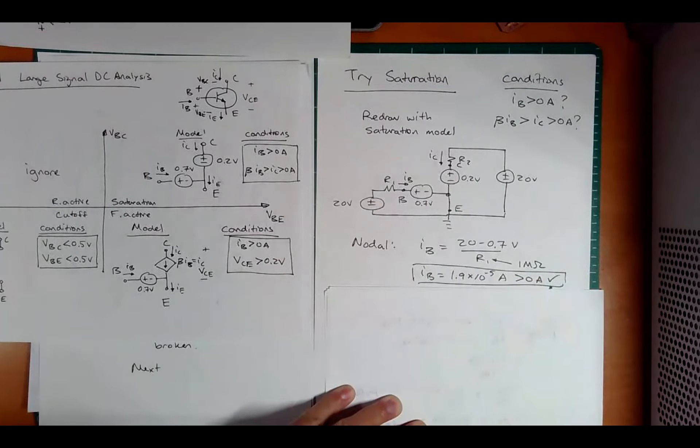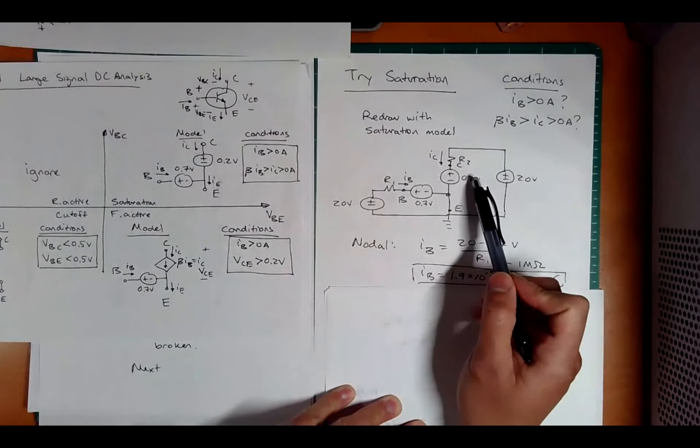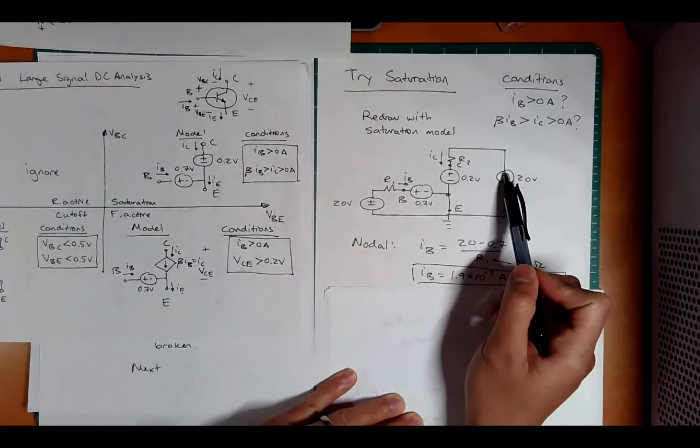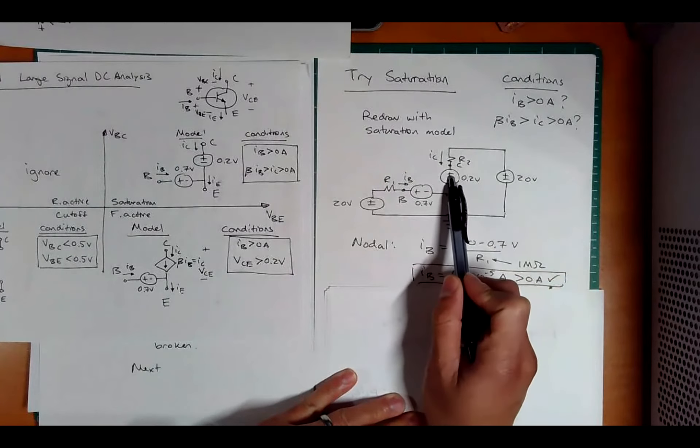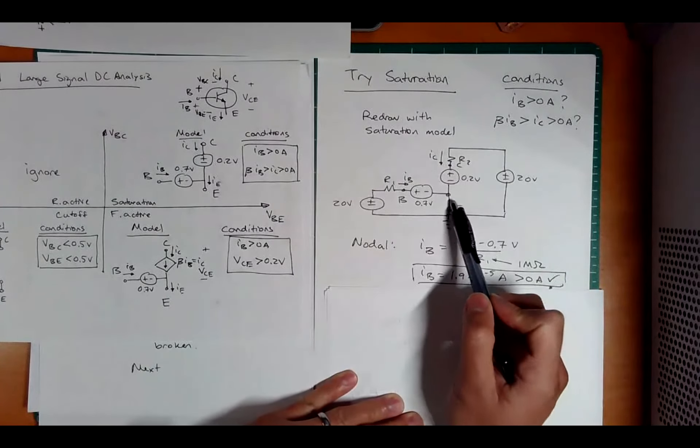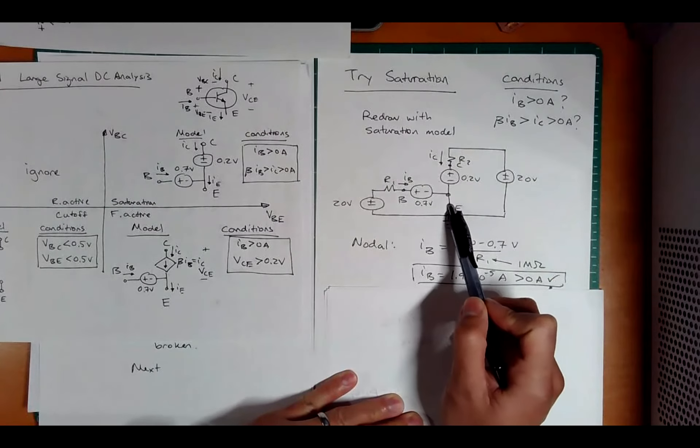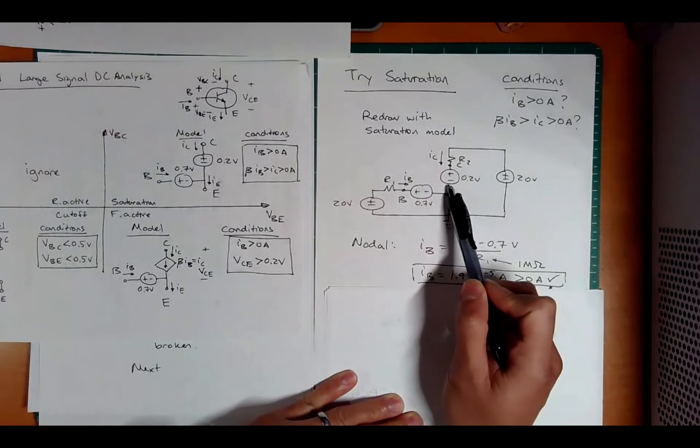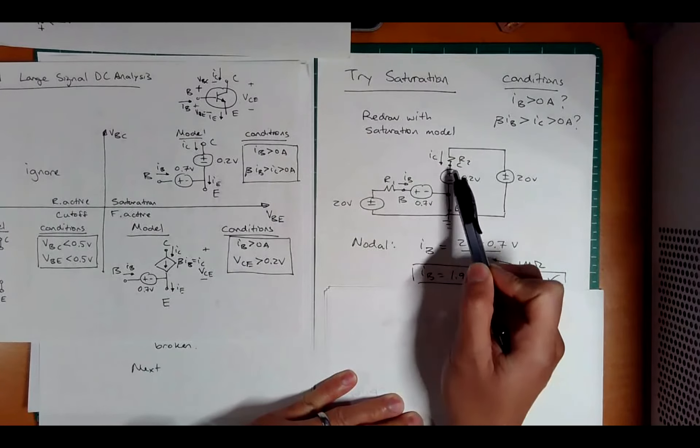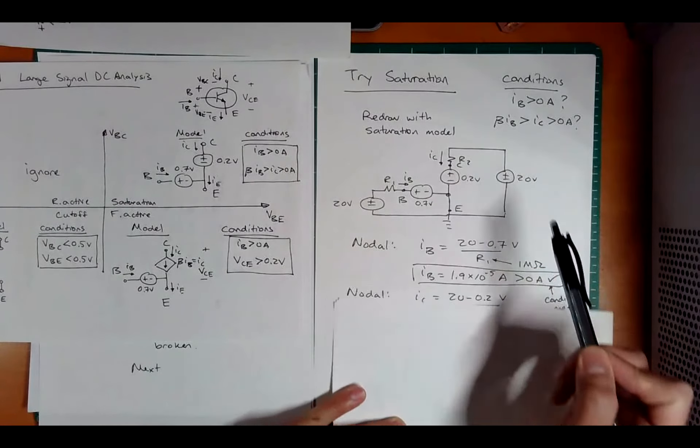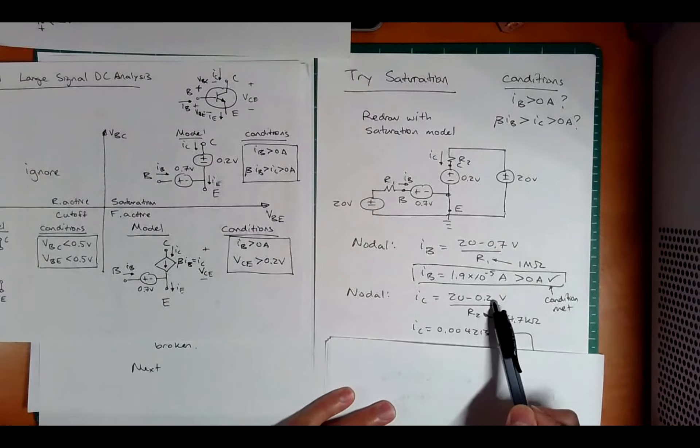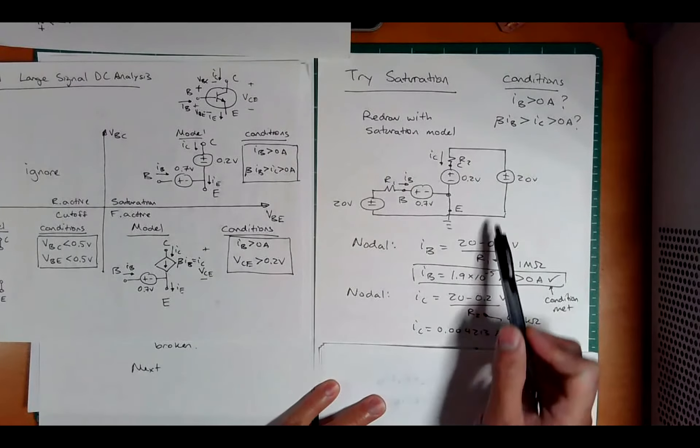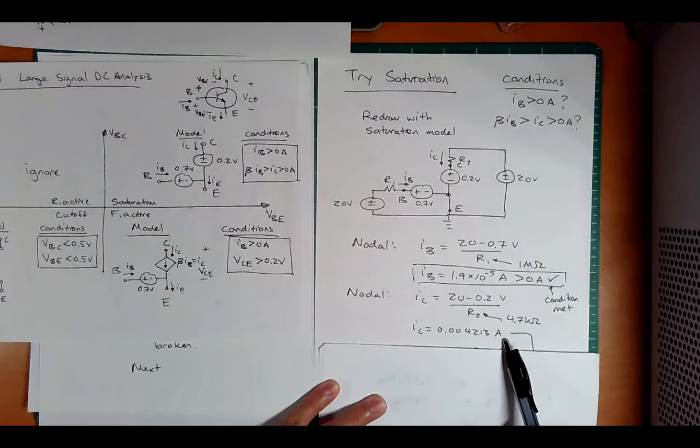What about this one? Oh, this one's easy too, because it's also a nodal Ohm's law. 20 minus 0.2 over R2. Now here's a common mistake. Let's say there were some elements here. That node voltage is no longer 0.2 volts, because this bottom goes to ground. Yes, that node voltage is 0.2 volts. But in this case, it's a pretty easy setup. 20 minus 0.2 over R2. IC is 0.004213 amps.